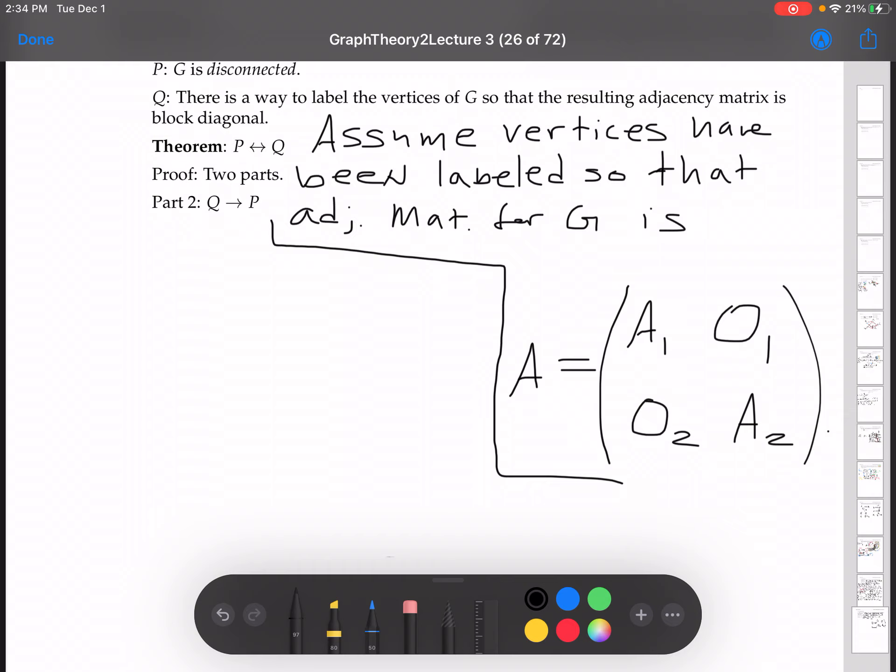Remember that A1 and A2 are adjacency matrices in their own right, and then 0₁ and 0₂ are matrices consisting of all zeros.